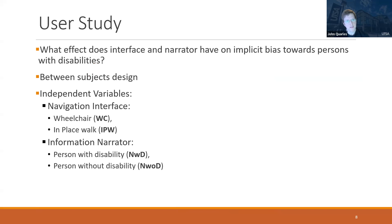We wanted to figure out the effect of the interface — in-place walking or wheelchair — and the effect of the narrator encountered along the path. This is a 2x2 between-subjects design with two independent variables: navigation interface (wheelchair or in-place walk) and narrator type (in wheelchair or not). Some narrators were in wheelchairs for some participants, and not for others.